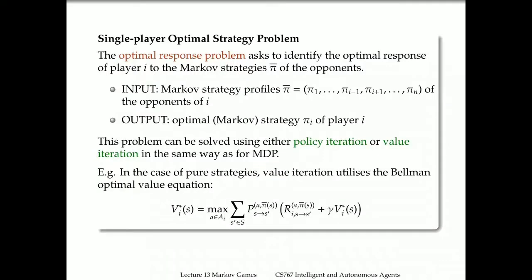The second problem is the optimal strategy problem. Given a Markov game, the goal is to identify an optimal response of player i to the Markov strategies of the opponents. Suppose we fix a Markov strategy profile of the opponents—the optimal Markov strategy of player i is the result of the optimal control problem and can be solved by either policy iteration or value iteration in exactly the same way as MDP. Everything naturally carries over to this multi-player case.